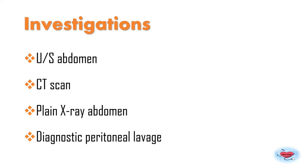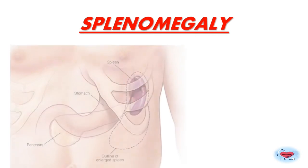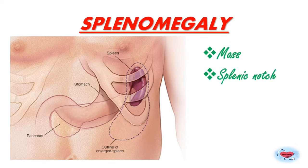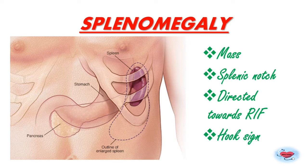Splenomegaly is enlargement of the spleen. Causes include infective conditions like tuberculosis, splenic abscess, infectious mononucleosis, malaria, typhoid, and kala-azar. Other causes include blood disorders, metabolic disorders, portal hypertension, and malignancies. Clinical features include a mass in the left hypochondrium with a palpable splenic notch that moves with respiration and is dull to percussion.